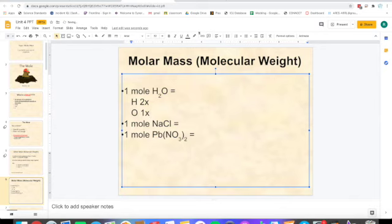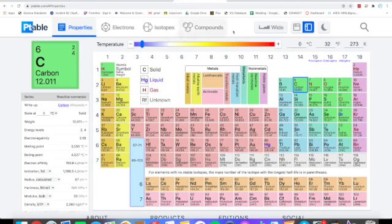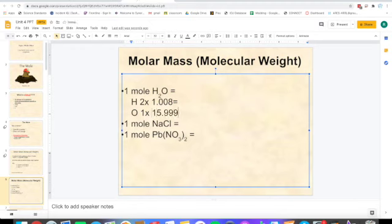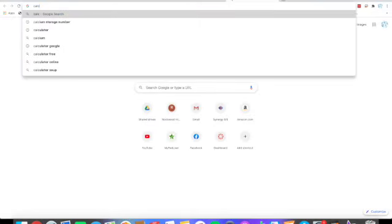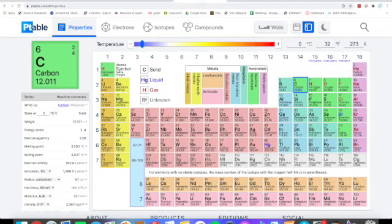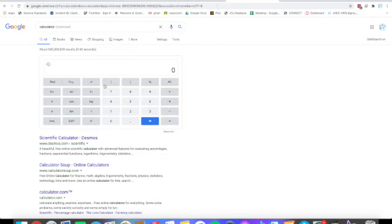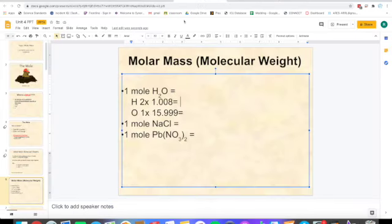Then I'll write the mass. We look at the periodic table - for H the mass is 1.008, and for oxygen we have 15.999. You'll type in a calculator what two times 1.008 is, so two times 1.008 equals 2.016, and 15.999 times one is just 15.999.